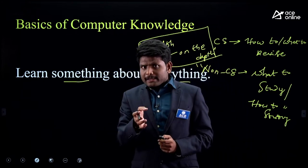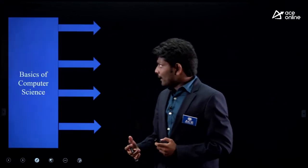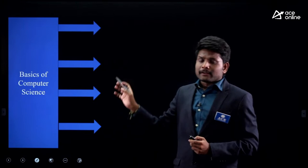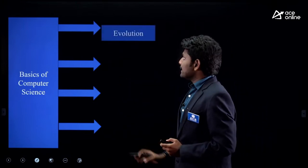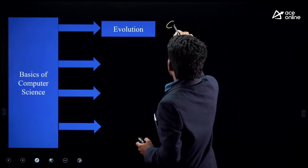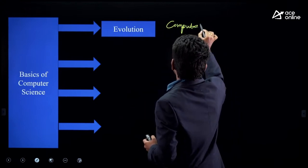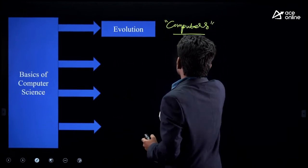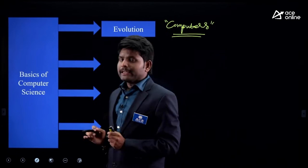Since this session is related to RRB JE, let me show you the major topics listed on the syllabus. One is evolution — how computers have evolved across generations. Let me give you a one-sentence idea on this topic.